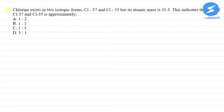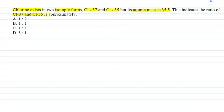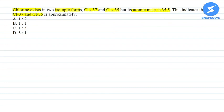Hello everyone. The question is: chlorine exists in two isotopic forms, Cl-37 and Cl-35, but its atomic mass is 35.5. This indicates the ratio of Cl-37 to Cl-35 is approximately — option A: 1:2, option B: 1:1, option C: 1:3, and option D: 3:1. We have to find the ratio of Cl-37 and Cl-35.